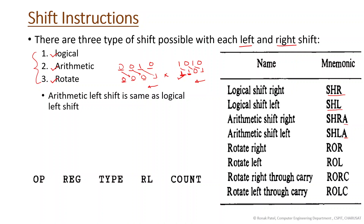In rotate, the bits wrap around. For rotate right on 1010: the result is 0101 — the rightmost bit moves to the leftmost position. For rotate left on 1010: the leftmost bit moves to the rightmost position, giving 0101.